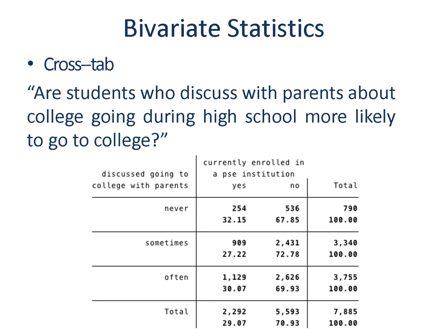Let's say the research question is whether students who discuss college going with parents are more likely to attend a post-secondary institution. We are looking at the relationship between discussing college going with parents — a categorical variable — and attending a post-secondary institution — a binary categorical variable. We create a cross-tabulation showing how many students who never, sometimes, or often discussed college going with parents were enrolled or not enrolled in college or university. We see that about 32% of students who never discuss with their parents attended college, while 27% and 30% who sometimes or often discussed attended college respectively. Therefore, there is not much difference in college enrollment for students with different levels of discussion with parents.